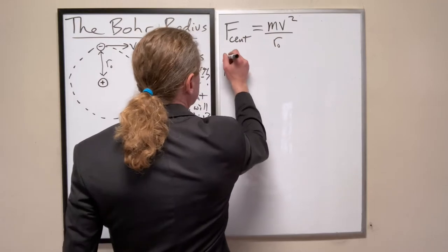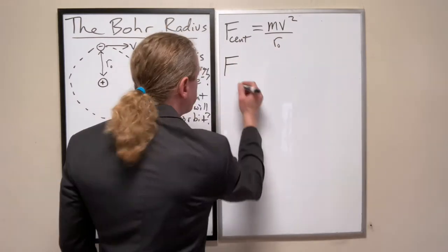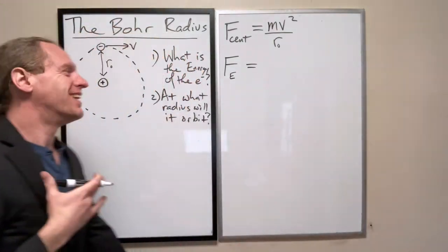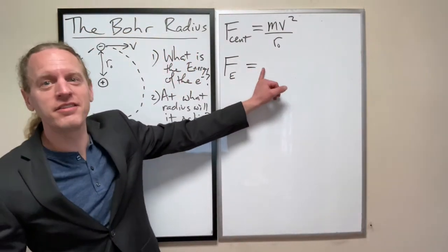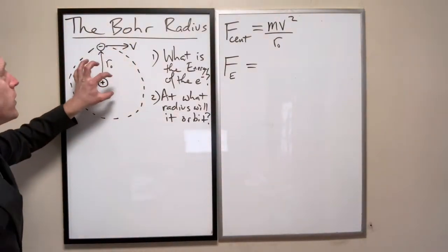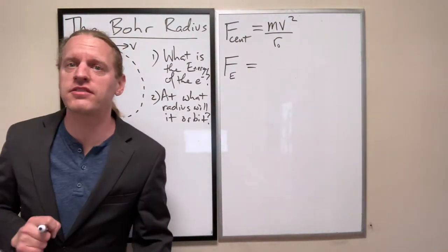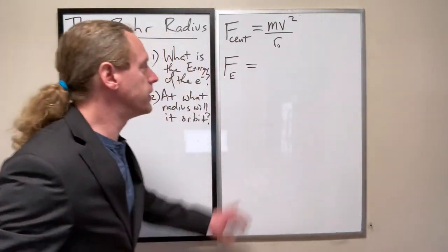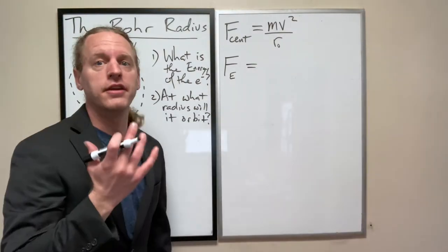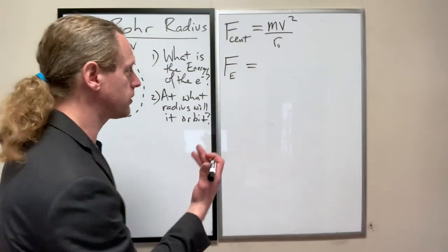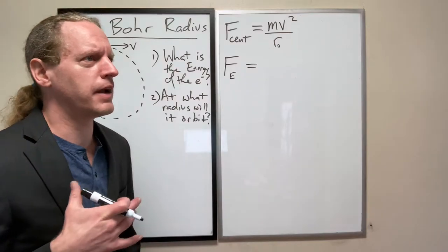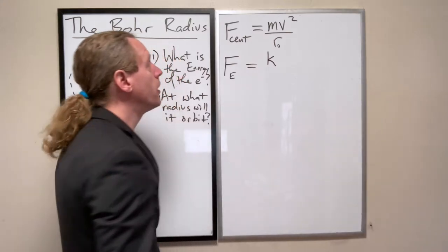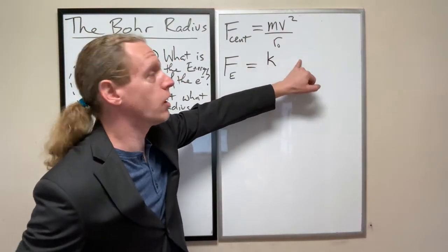We're going to view this as the electromagnetic attraction is what keeps that electron in orbit. The electrostatic force, F sub E, we can write as the Coulomb force. The Coulomb force classically is written as Coulomb's constant K times charge 1, charge 2.